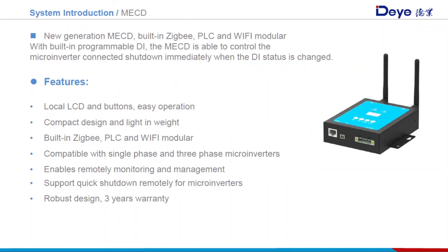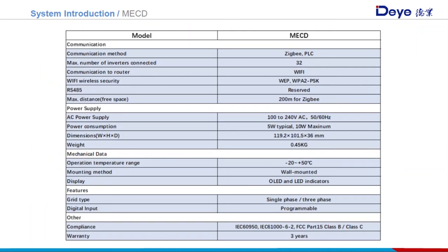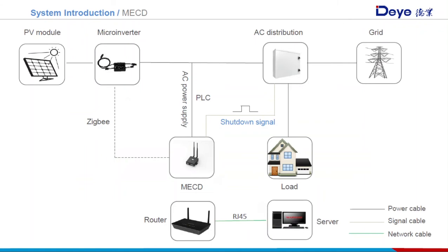The second-generation MECD has a built-in ZigBee, PLC, and Wi-Fi module, so it doesn't need additional Wi-Fi data loggers. Importantly, it includes a DI input for remotely controlled microinverter shutdown. It supports a maximum of 32 microinverters per MECD, has an OLED screen and LED indicators, and is compatible with single-phase and three-phase systems. When there is a COM2DI input signal from the distribution box, the MECD will command the connected microinverters to turn off quickly — a feature well-suited for the American and UK solar rooftop market.